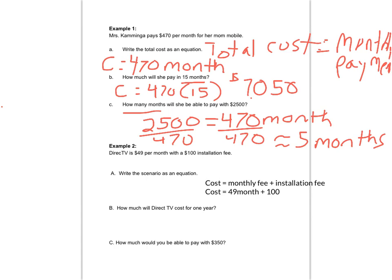How much will it cost for one year? That goes in for months, so I place 12 since one year is 12 months. I have 49 times 12, which is $588, plus $100 is $688.